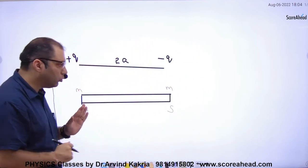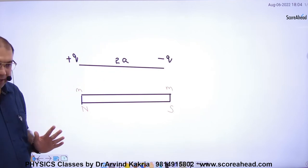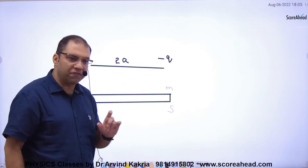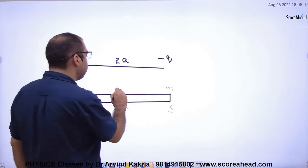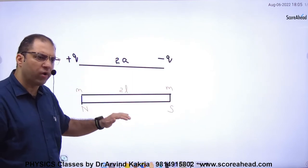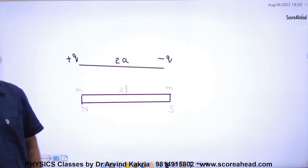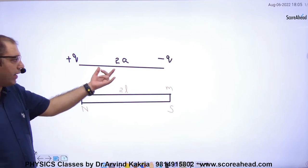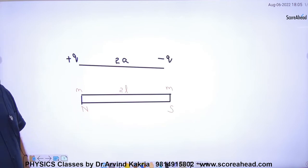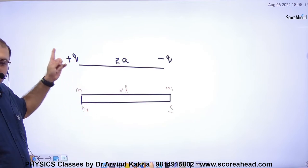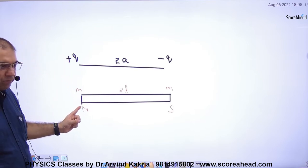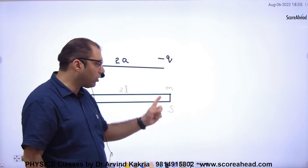This is an electric dipole, and this is a magnetic dipole. A magnetic dipole is when two poles of the same pole strength m and m are separated by a small distance 2L, just like 2A. Remember: whatever work Q does, small m does the same. Whatever work plus does, north does. Whatever work minus does, south does.